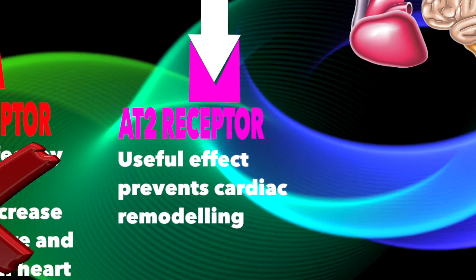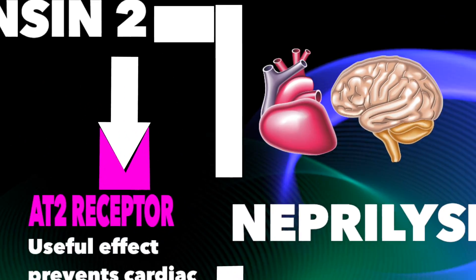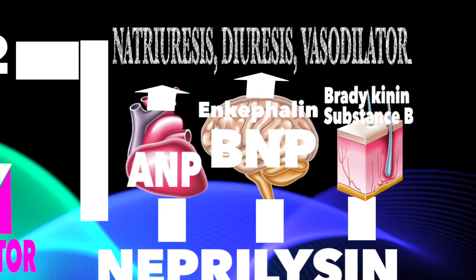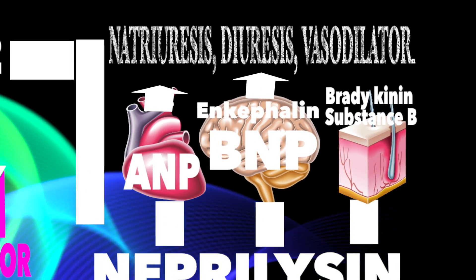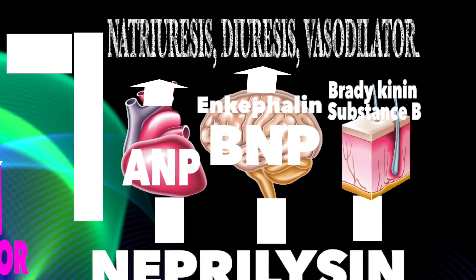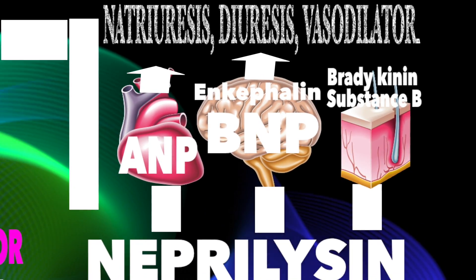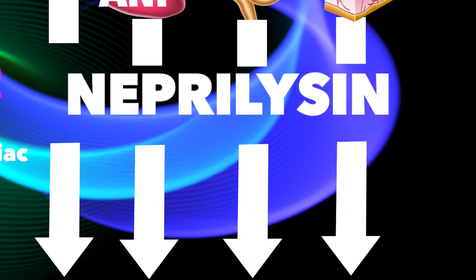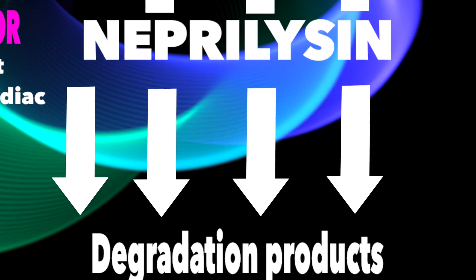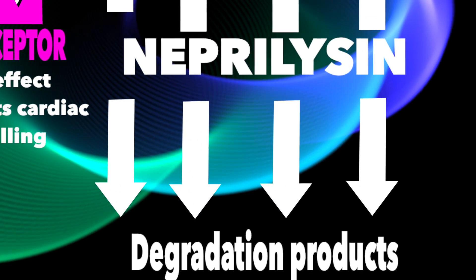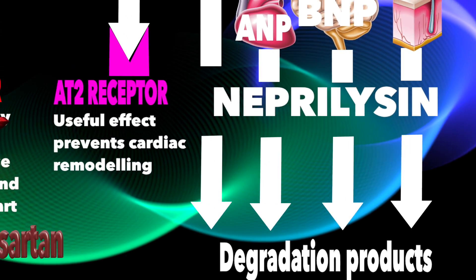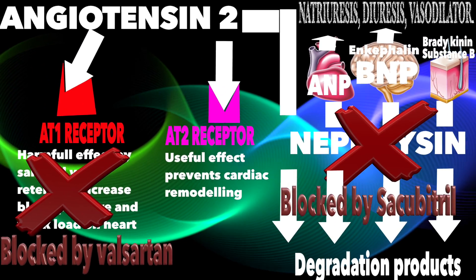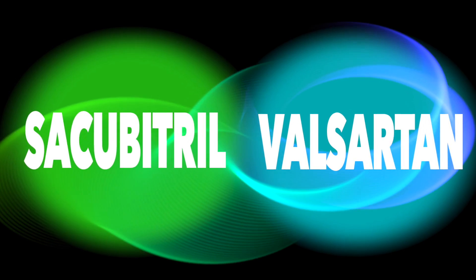A useful effect may be lost if degraded by the neprilysin enzyme. Three other compounds that help in compensation of heart failure include atrial natriuretic peptide, brain natriuretic peptide, enkephalin, bradykinin, and substance P. They are all degraded by the same enzyme as angiotensin 2.